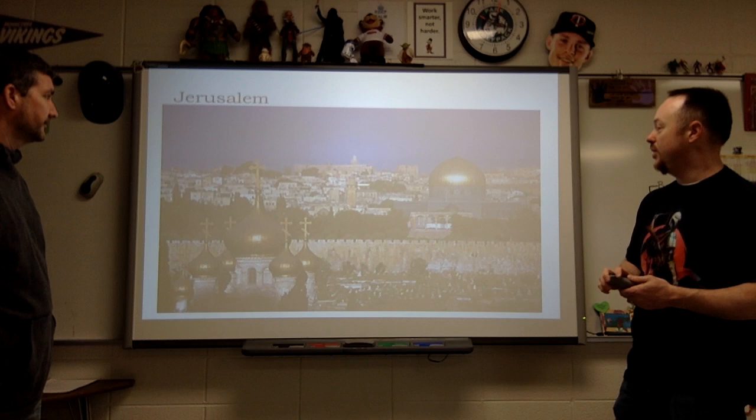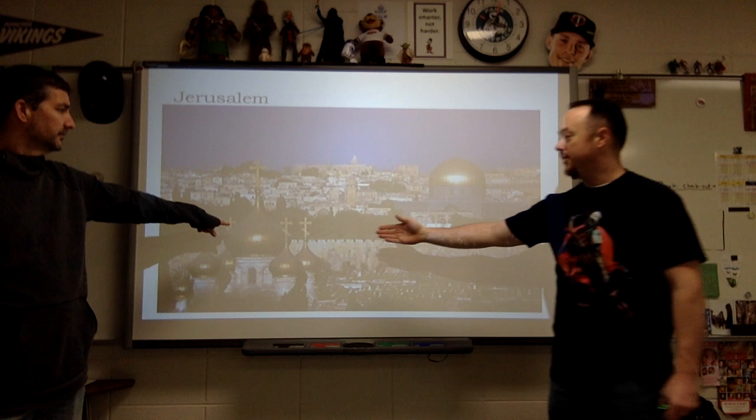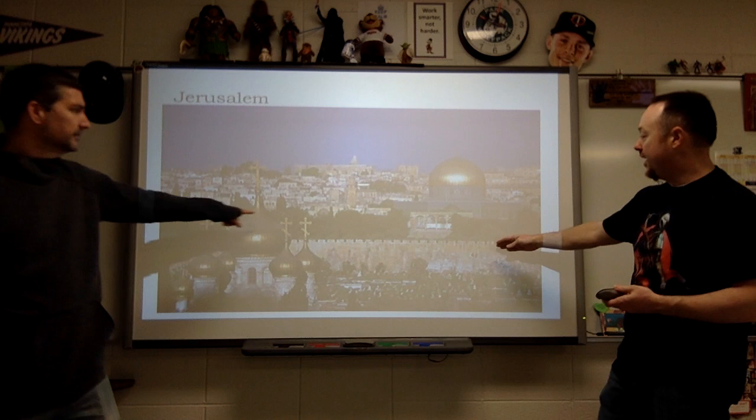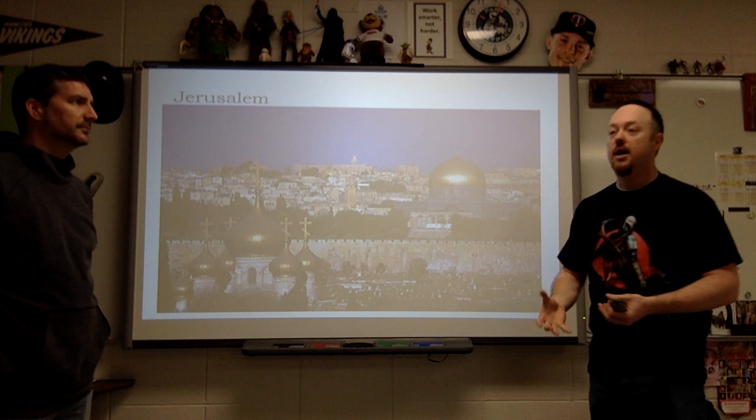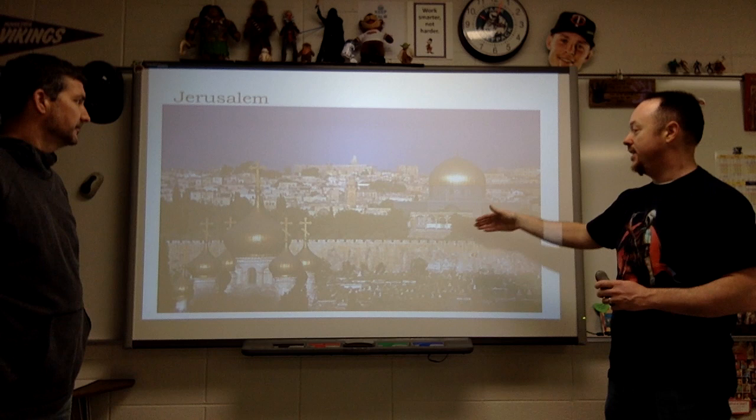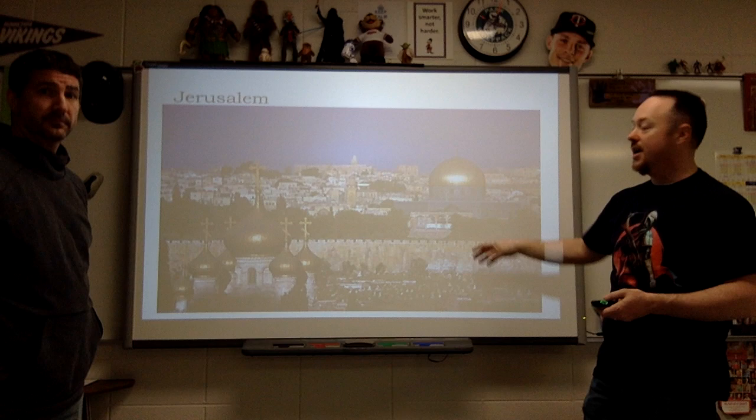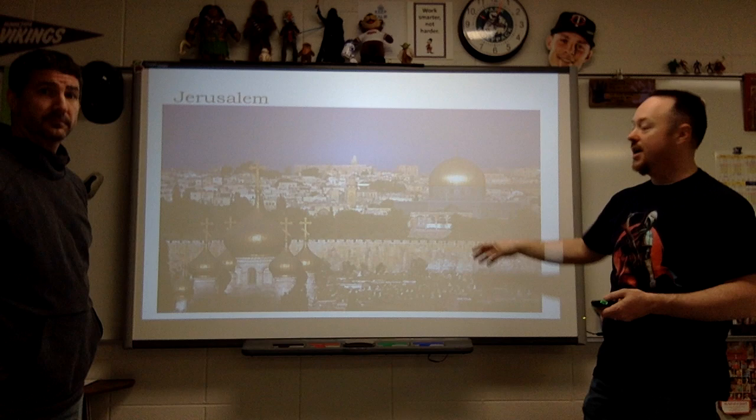Here's Jerusalem. There are three holy sites for three different religions here. In the foreground, the Church of the Holy Sepulchre — said to be on top of the tomb of Jesus. In the back, the Wailing Wall or Western Wall — a holy site for Judaism. And up on top of the wall, the Dome of the Rock — said to be where Muhammad ascended into heaven. All three of these holy sites are literally within walking distance of each other. That's why Jerusalem has become a highly sought-after territory and city over time.